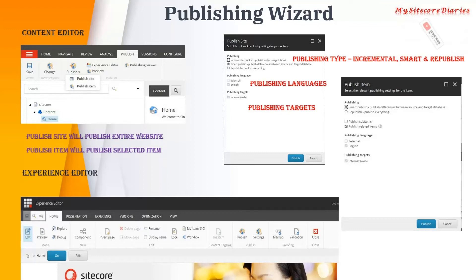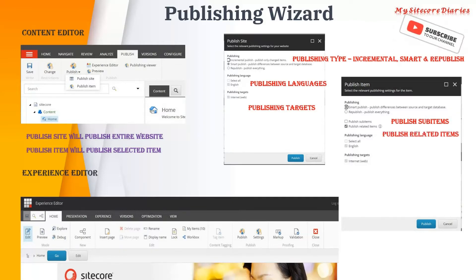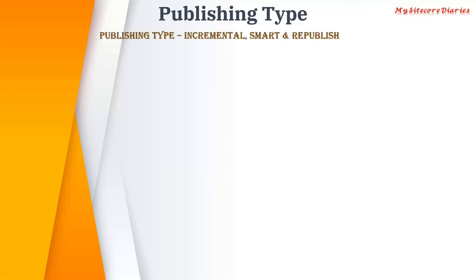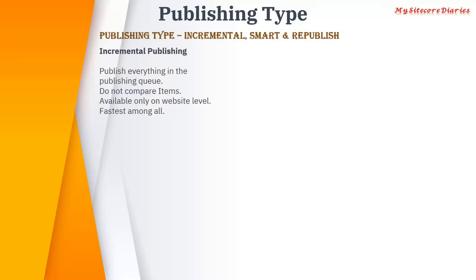There is also an option to publish sub-items, and another option to publish related items — we will see what those do. There are three publishing types: incremental, smart, and republish. Incremental publish publishes everything in the publishing queue — we will see what that means. Let's first look at smart publish and republish.